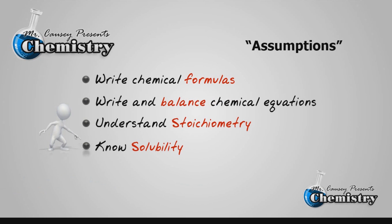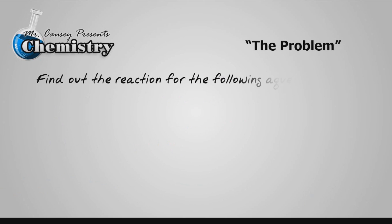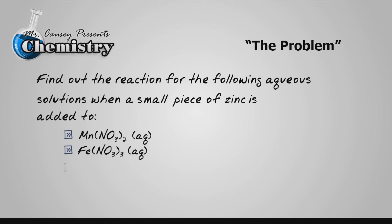Alright, let's look at the problem. Determine the reaction for the following aqueous solutions when a small piece of zinc is added to these aqueous solutions listed below: manganese nitrate, iron 3 nitrate, and nitric acid. Now one of the first things you want to do is focus on the word aqueous. Aqueous tells us that they've been dissolved in water, that all three are soluble, and we want to determine will zinc react with these and replace the metal.